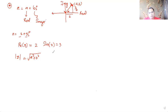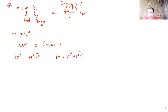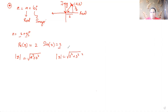For example, the modulus of 2+3i is √(2²+3²). A common mistake is squaring (3i) instead of just 3 — the imaginary part is only 3, not 3i. So we get √(4+9) = √13, which is the modulus of this complex number.